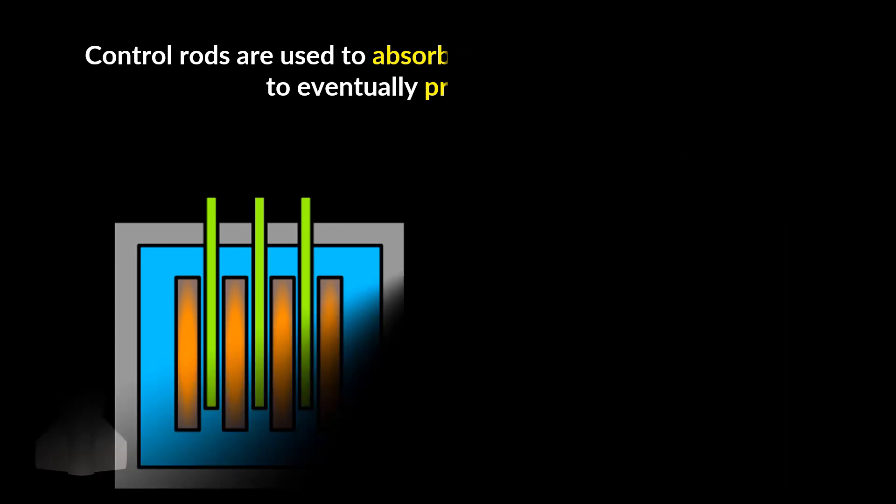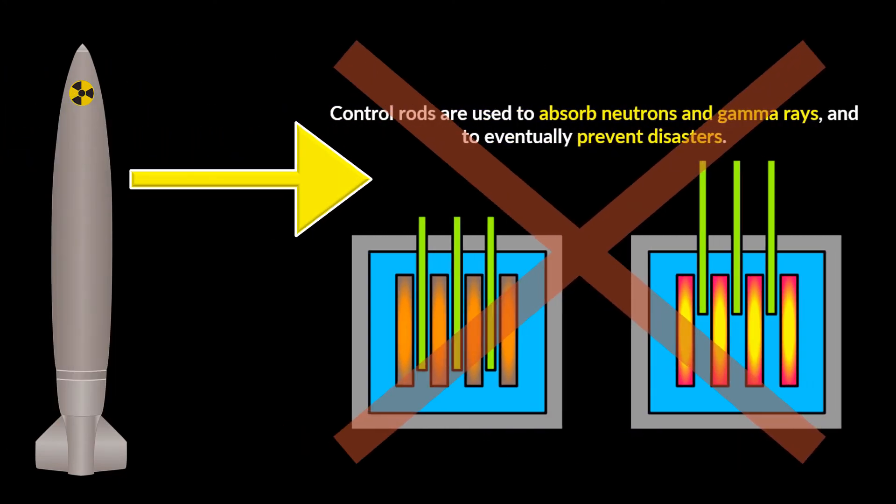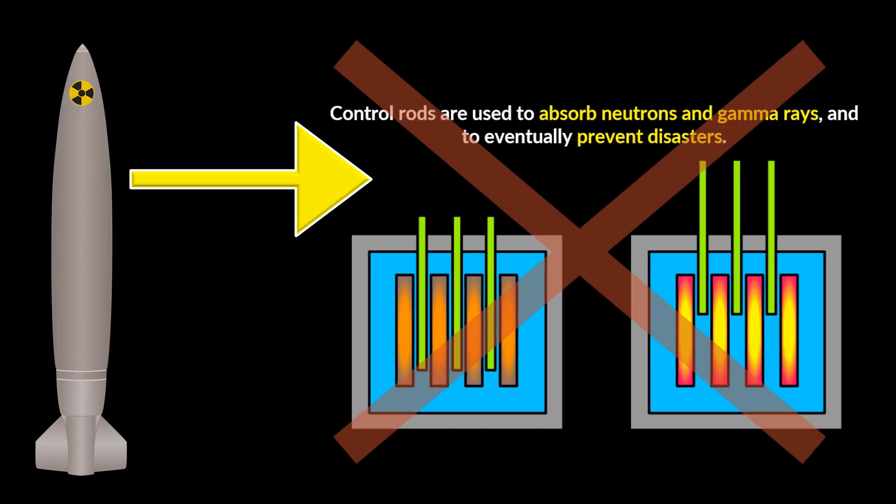In nuclear weapons, however, graphite is not used because the explosion and emission of gamma rays is the desired output.